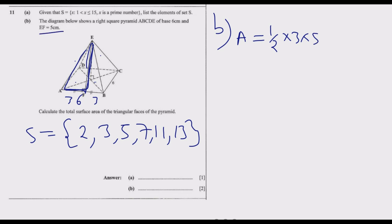We get 7.5 centimeters squared. Then we multiply by 2, which gives us 15. Then we multiply by 4 faces, so we get 4 multiplied by 15, which is 60 centimeters squared.